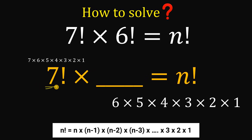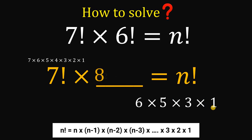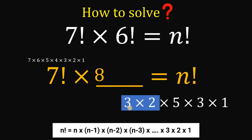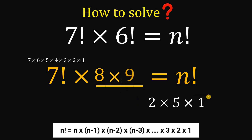Since we already have 7, let's try to build an 8. To get 8, we need 4 × 2, because 4 × 2 = 8. Next, after 8, we need 9. Notice that the 6 can be factored as 2 × 3. Now we can focus on 3 × 3 — if we multiply this 3 by that 3, we get 9. Then, multiplying 2 × 5 × 1 gives us 10.